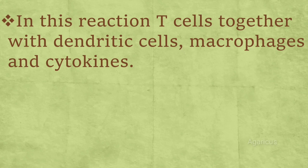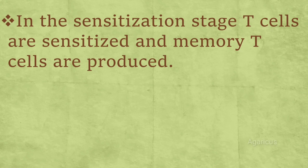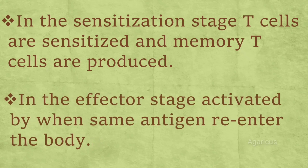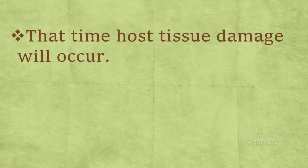In this reaction, T-cells together with dendritic cells, macrophages, and cytokines are involved. Reactions develop by two stages: the sensitization stage and the effector stage. In the sensitization stage, T-cells are sensitized and memory T-cells are produced. In the effector stage, activated when the same antigen re-enters the body, host tissue damage will occur.